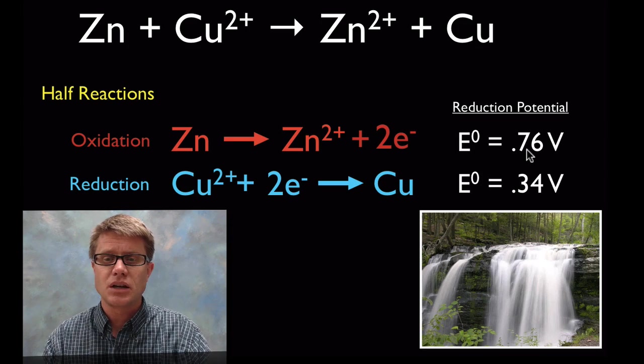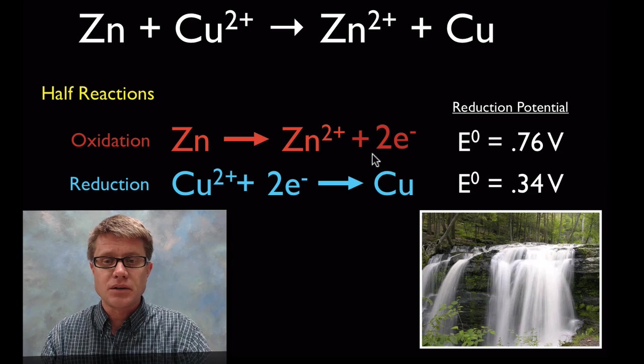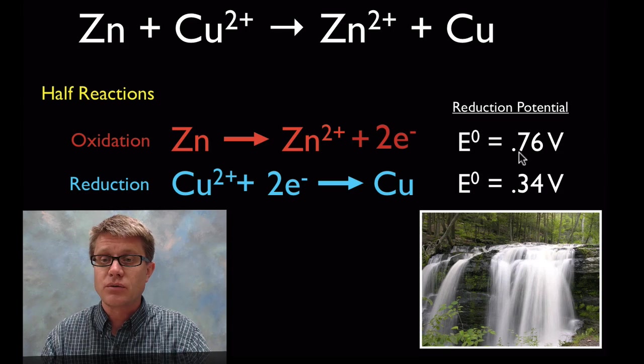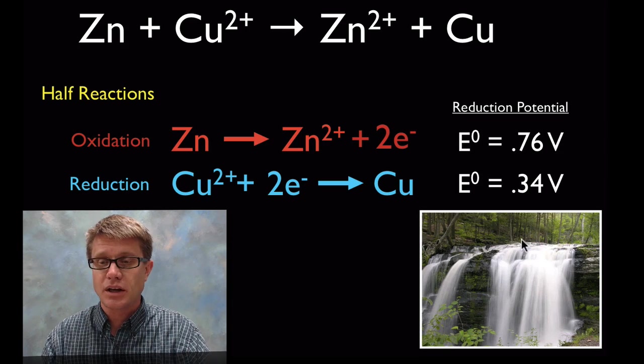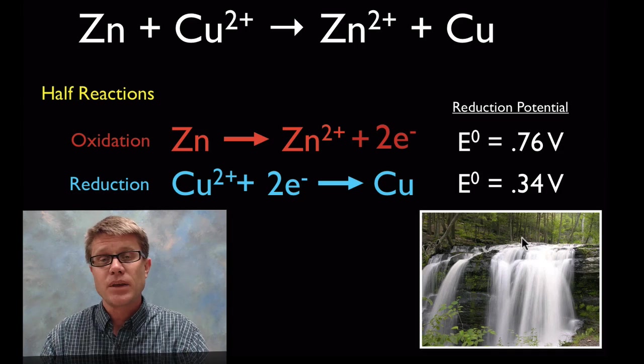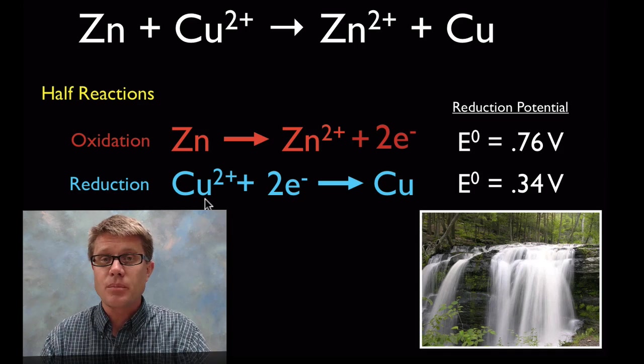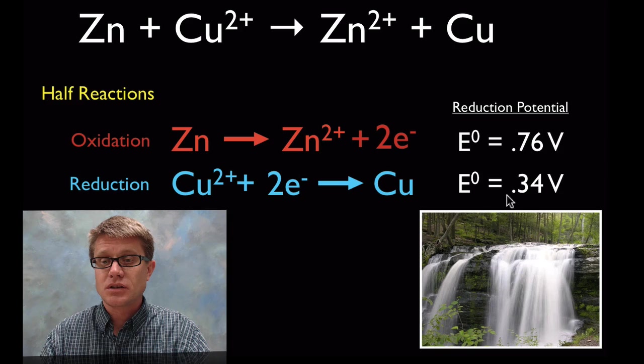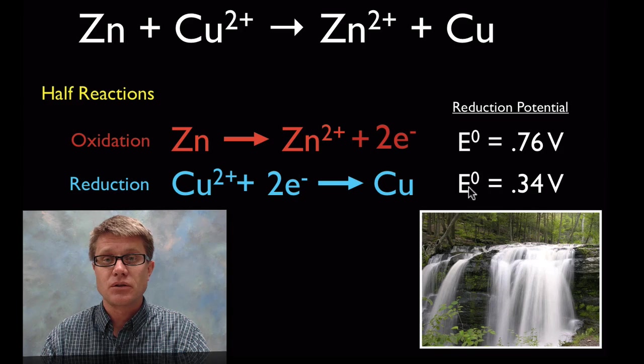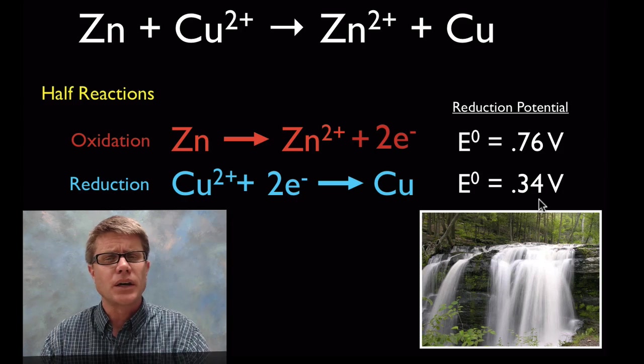And so you can look up standard reduction potentials and you'll find a list of these for a number of different reduction and oxidation reactions. Now the cool thing is if we run it in the other direction then it would be negative 0.76 volts. In other words it would be like trying to move the water up again. It would require that energy. So if we look at the reduction part, this copper gaining of electrons, it's going to have a reduction potential or E⁰ of 0.34 volts.